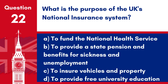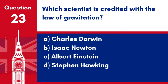Question 22. What is the purpose of the UK's national insurance system? a. To fund the National Health Service. b. To provide a state pension and benefits for sickness and unemployment. c. To ensure vehicles and property. d. To provide free university education. Answer: b. The National Insurance System in the UK is designed to fund state benefits, including pensions, sickness and unemployment benefits.